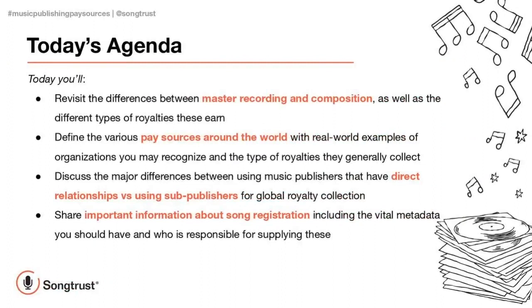Today, just a quick run through of the agenda. We're going to touch on a number of different things. First, we're going to talk about master recordings and compositions and the different types of royalties that you get from those. Then we're going to move on to the pay sources around the world — the different types of organizations that we as publishers or you as a songwriter might look to get royalties from. We'll also look at the relationships between publishers and the various pay sources, as well as publishers and sub-publishers and what the differences are. And we'll also give you important information about song registration and why all of the metadata you provide us is so important.